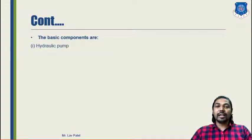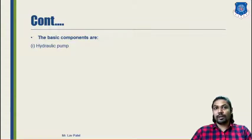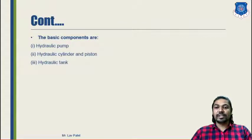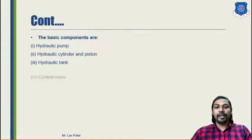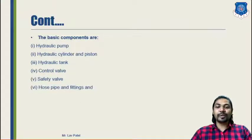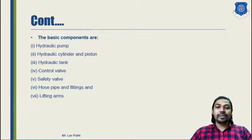In our hydraulic system we use different kinds of components. The basic components are: the hydraulic pump, which transports oil from one component to another; the hydraulic cylinder and piston; the hydraulic tank or storage tank where the oil is stored; the control valve; safety valve; hose pipes and fittings; and the lifting arm.